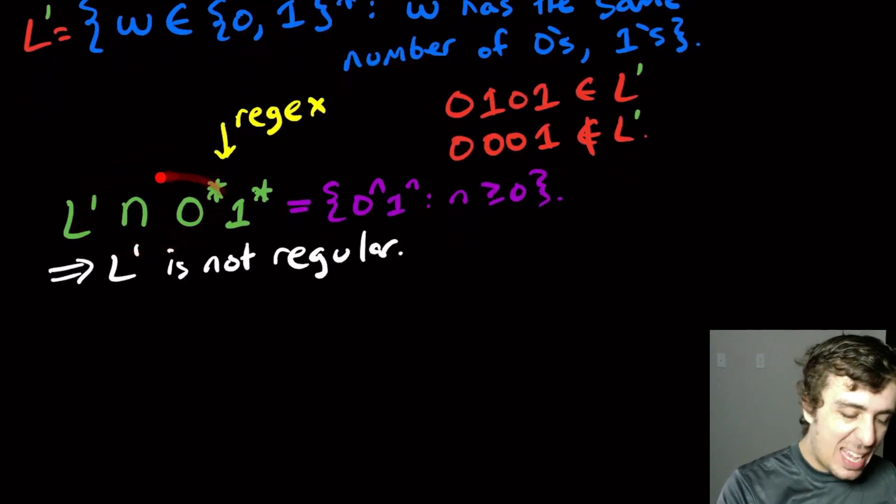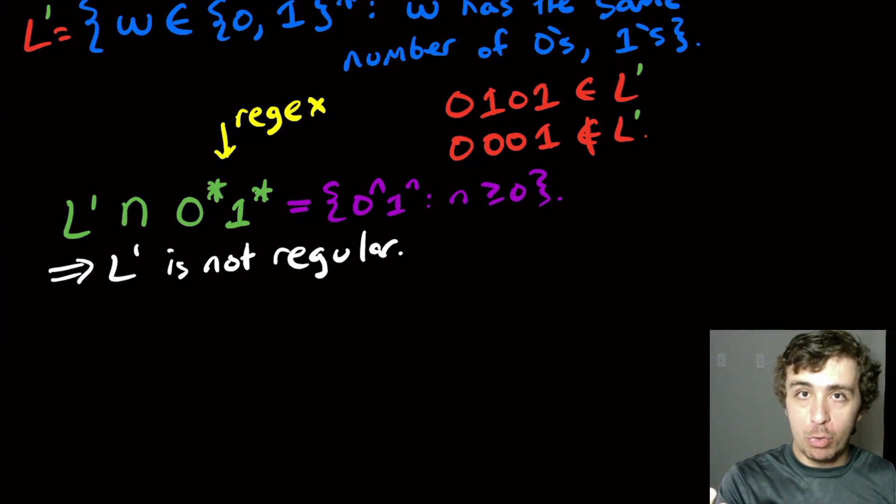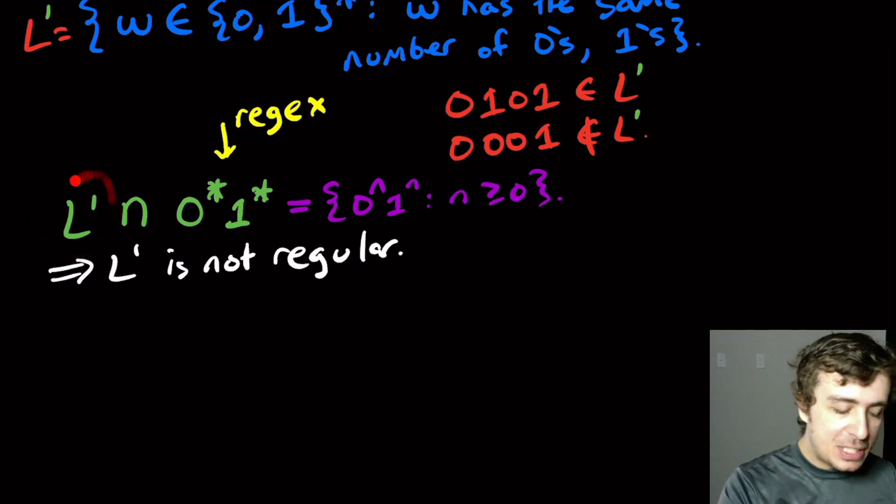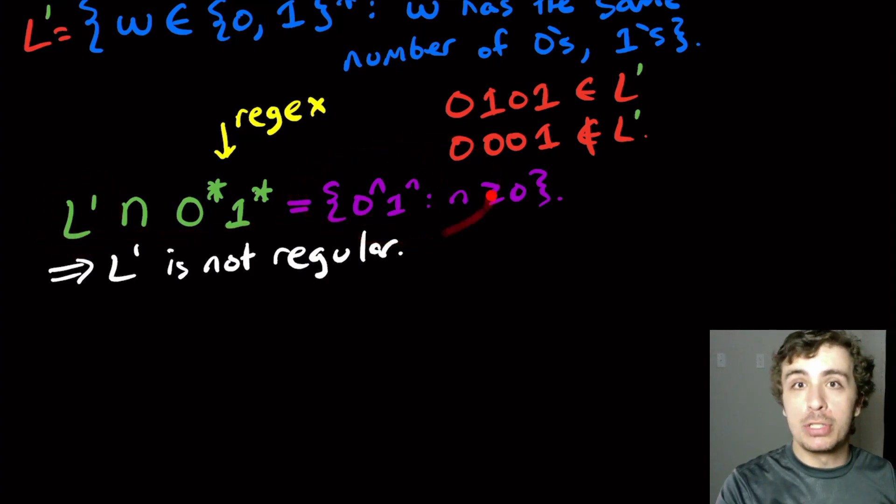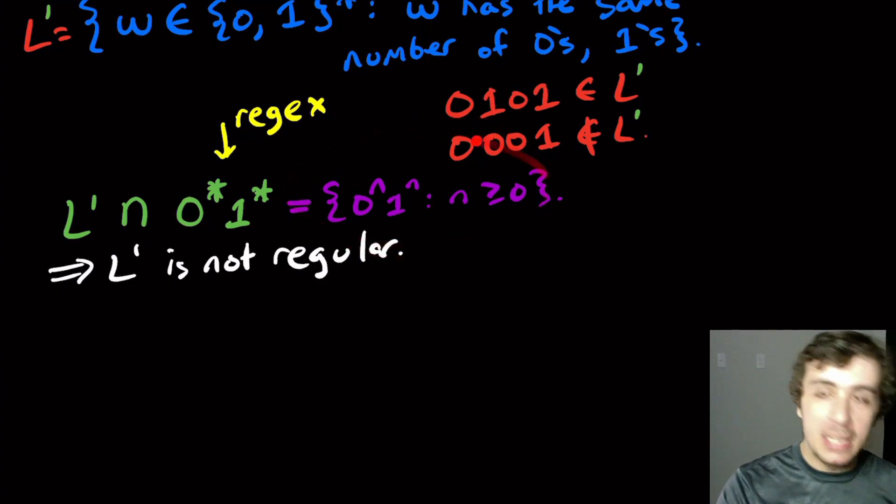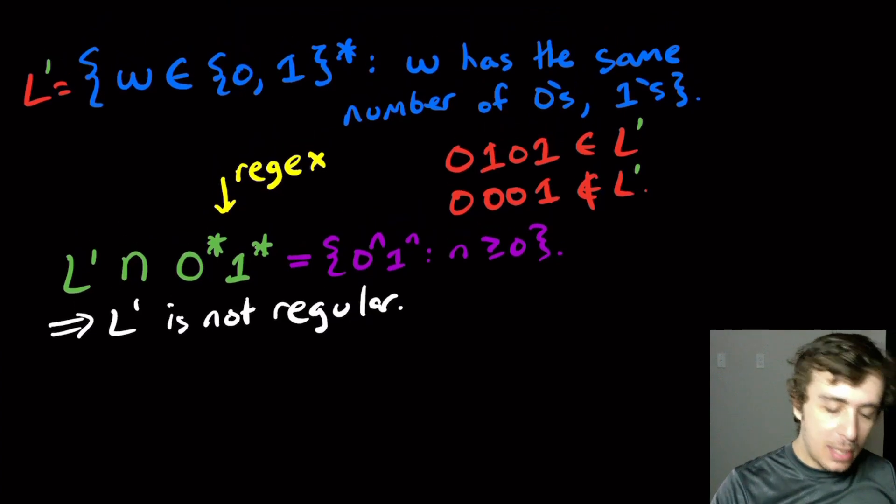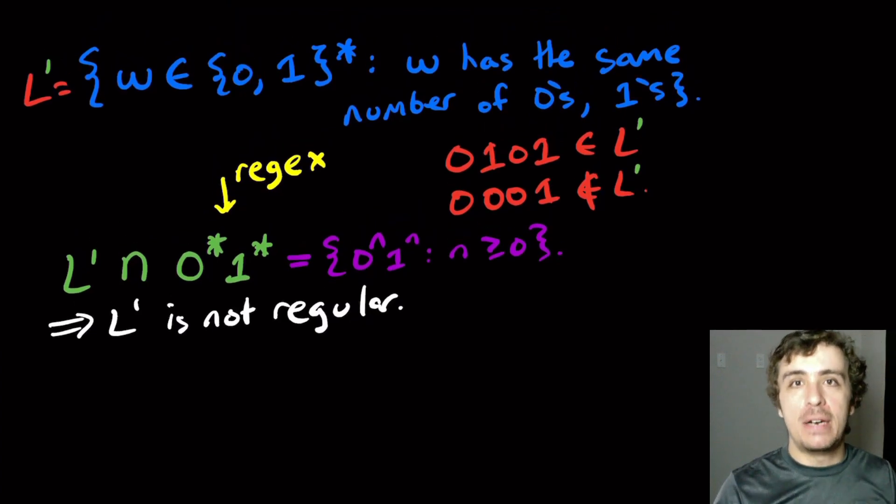So often we intersect things with regexes like this, it preserves the regularity of whatever this is. Actually, it doesn't, but if this thing is regular, then the resulting thing is regular. So then the contrapositive is, if the resulting thing is not regular, then the original thing couldn't have been regular. So it preserves the regularity in that sense. So use these techniques, it's very, very useful.